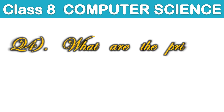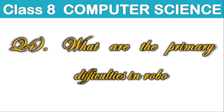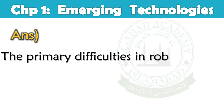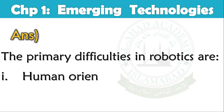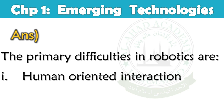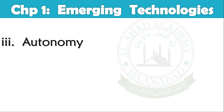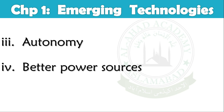Question number 4. What are the primary difficulties in robotics? Answer. The primary difficulties in robotics are Human-oriented interaction, navigation, autonomy, and better power sources.